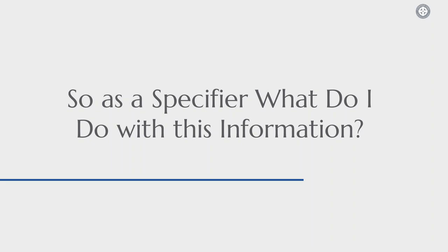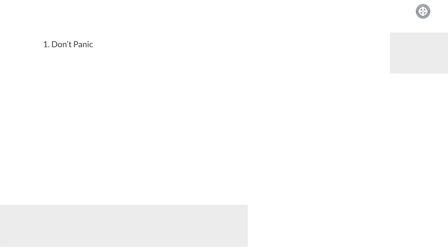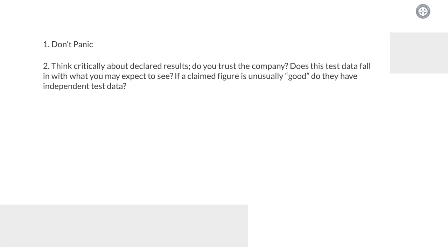As a specifier, what do you do with this information? Because everything I've just told you basically tells you that you can't use any of the results given by a manufacturer. First off, don't panic. So long as you understand that these results can be used as a yardstick but are not what you get in real life, you're halfway there already. Think critically about any declared results. Do you trust the company? Does this test data fall within what you might expect to see? Sometimes you can come across unusually good figures, and I am very pointedly putting 'good' in quotation marks depending on what you're looking at. Within this industry, because we are still a relatively niche industry, it's very uncommon to get independent test data, so it can become quite difficult to get actual realistic figures on a product.